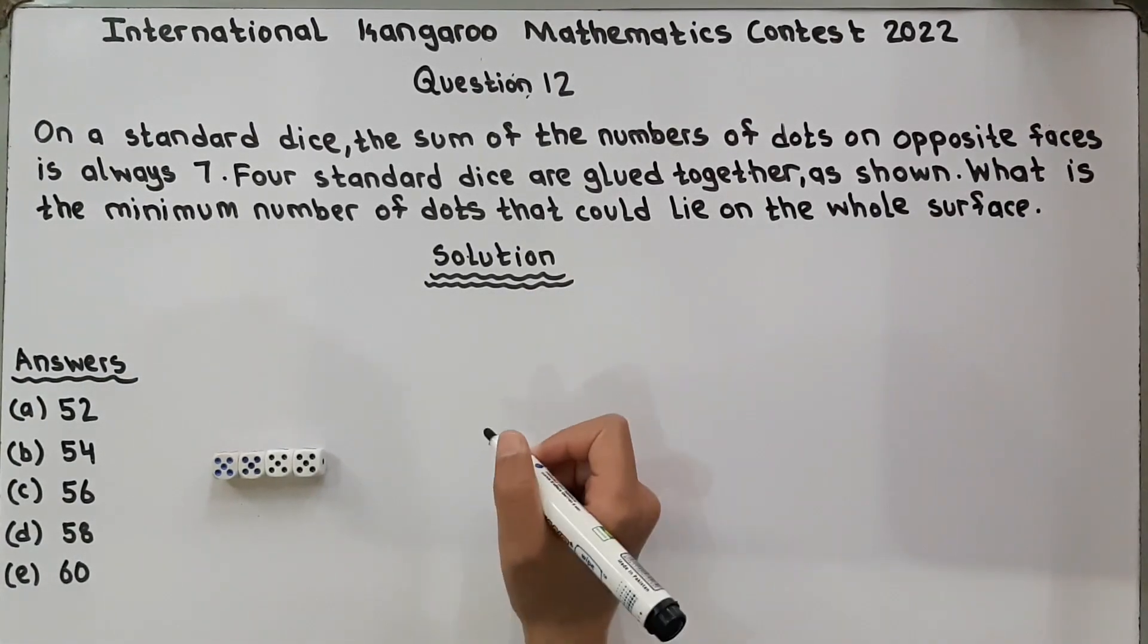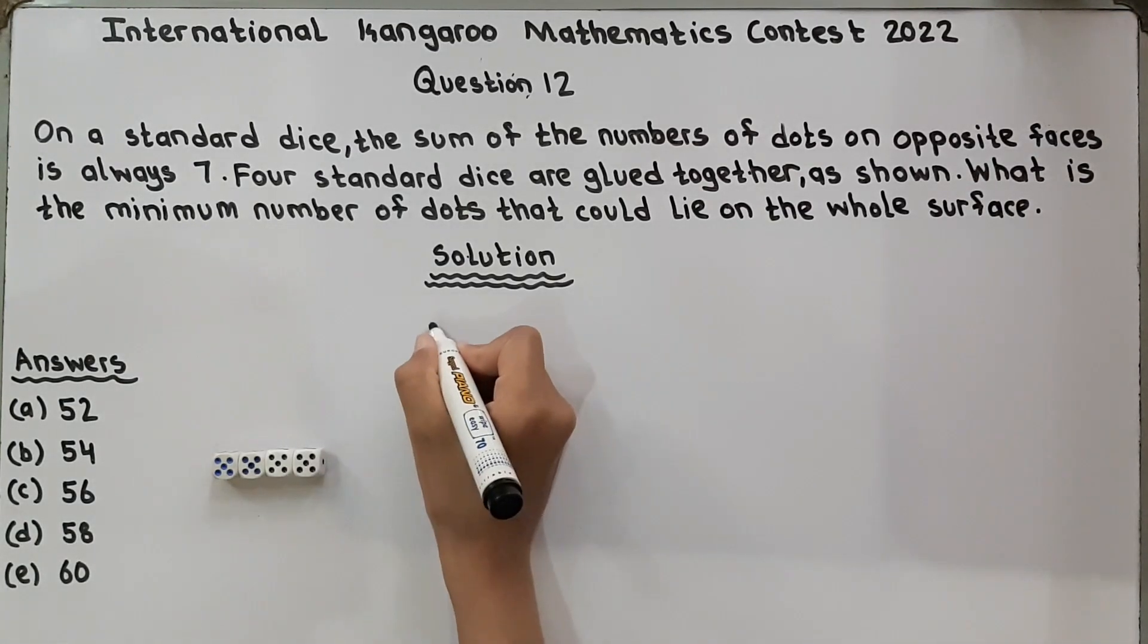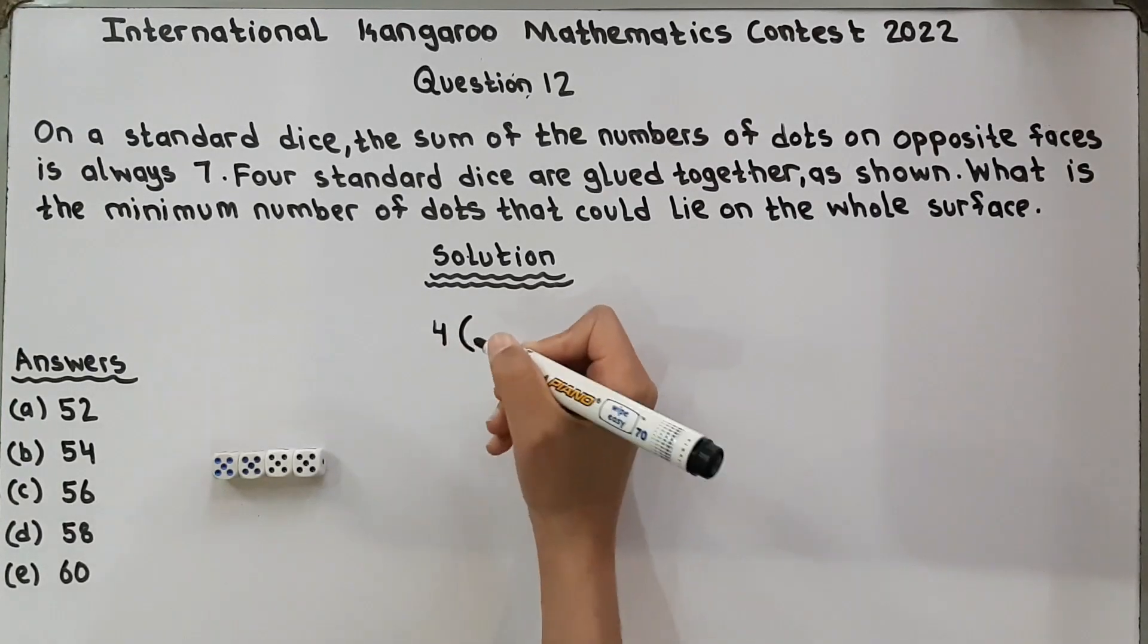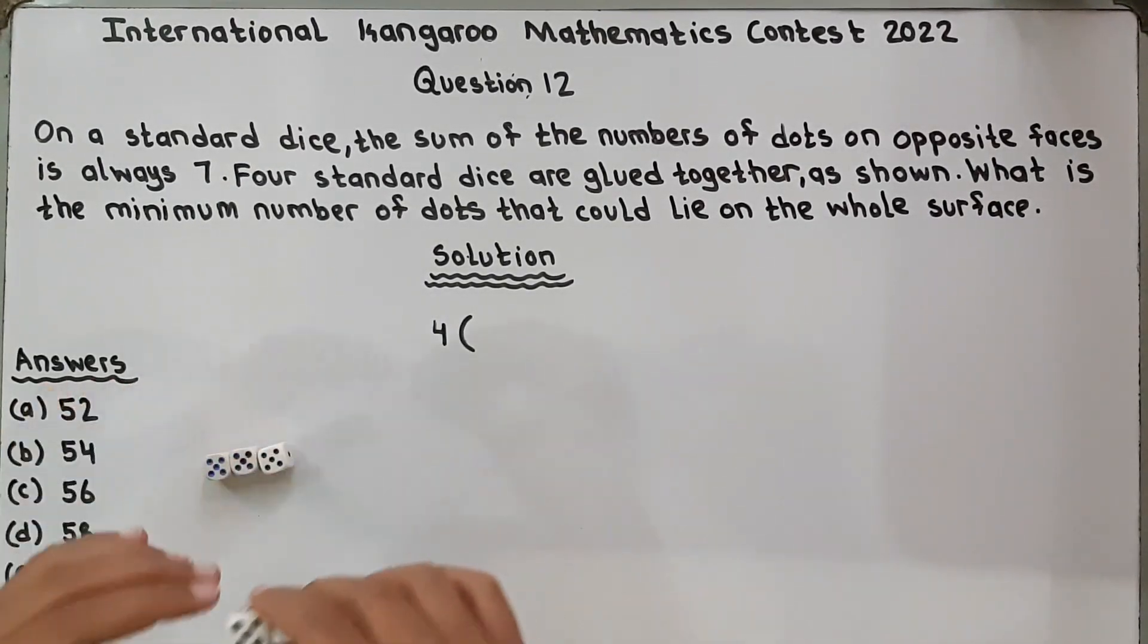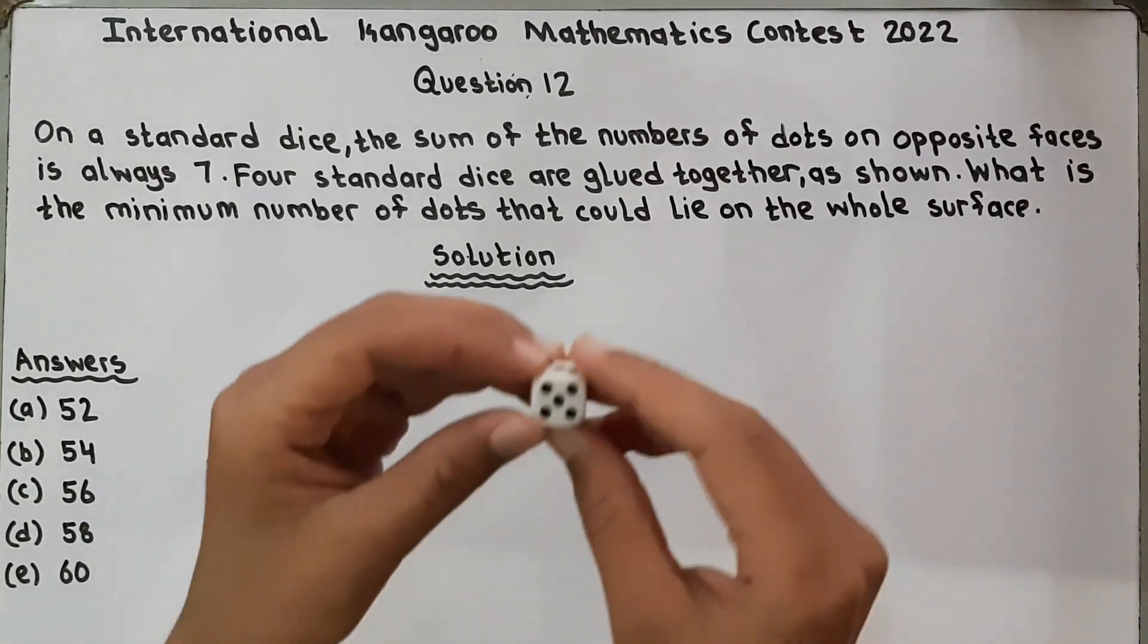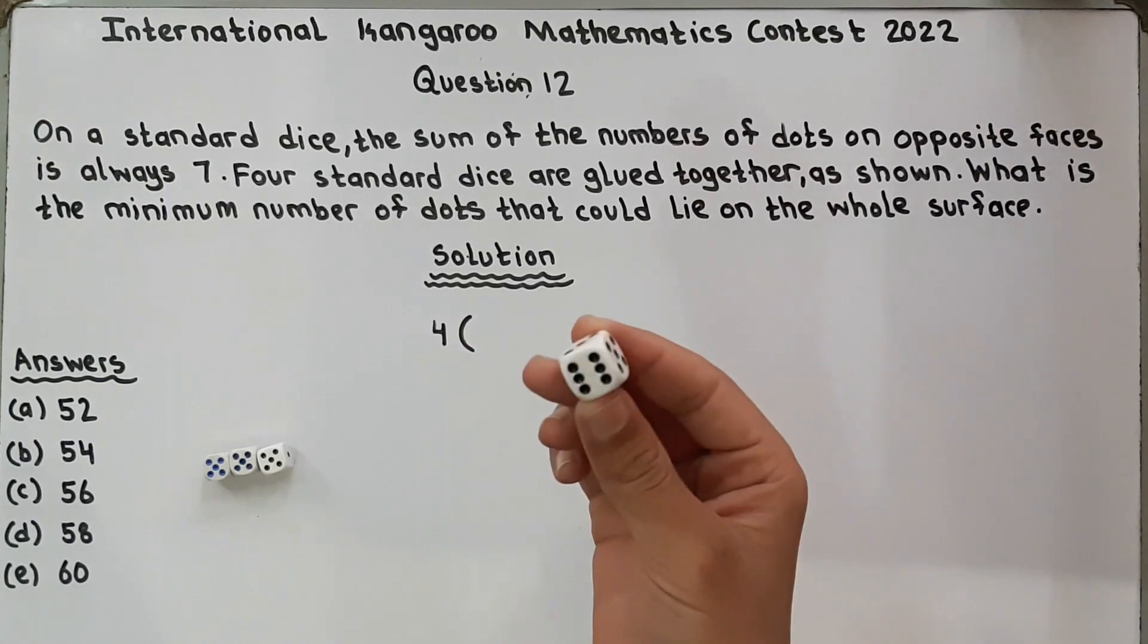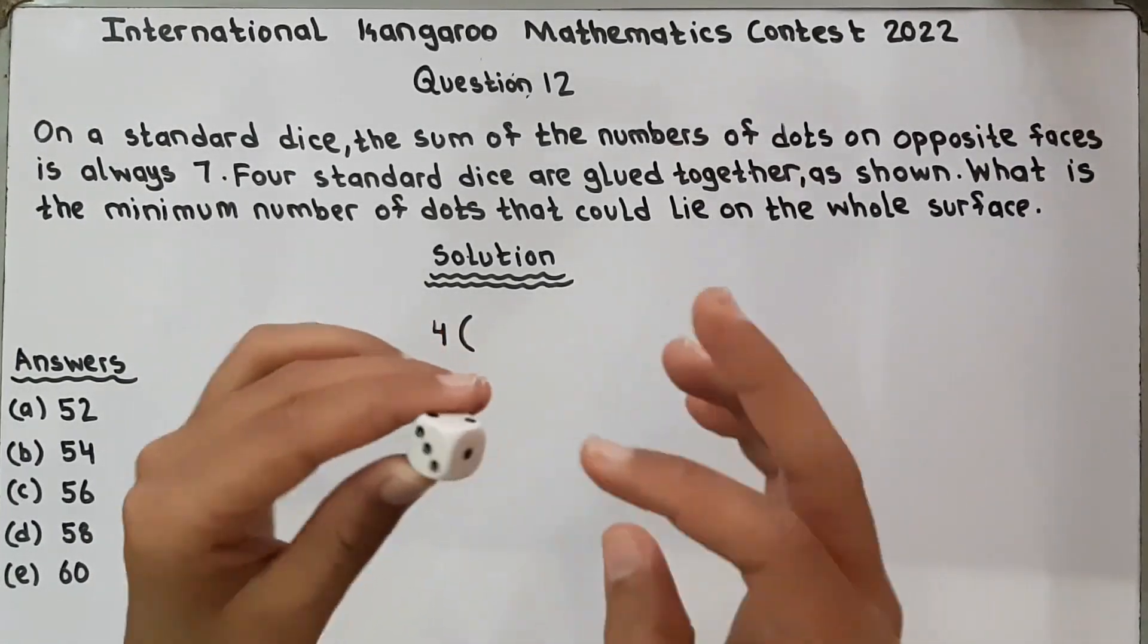The sum of the numbers of dots on opposite faces is always 7. We have verified it. Now, total number of dice are 4. So multiply by the rest of the numbers. Like, this is hiding with this, so we will not count this 6. So the 6 is hiding with these dices, so we will not count 6. We will count it as 5, 4, 2, 3 and 1.